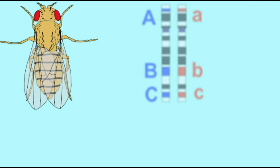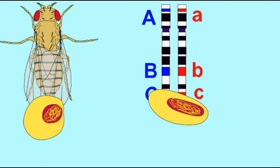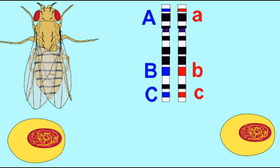One half of the X chromosomes possess the wild type alleles for yellow, white, and miniature. Therefore, any male flies which receive this chromosome will have the wild type phenotype for all three traits — a tan body, red eyes, and normal length wings. Male flies have only one X chromosome received from their mother, so if they receive this wild type chromosome with these three wild type alleles, that will be their phenotype.